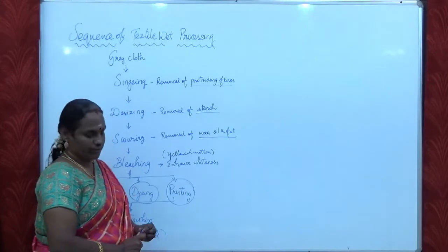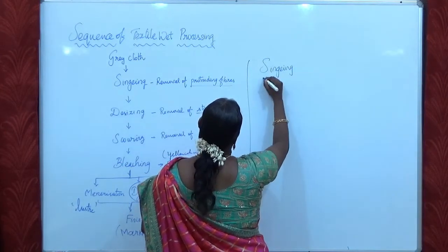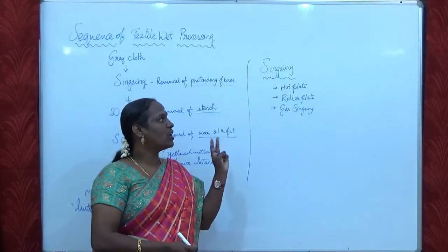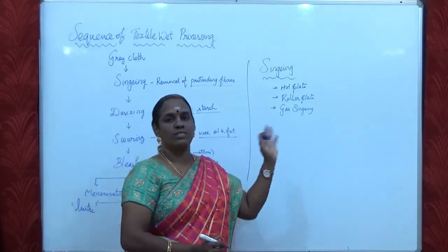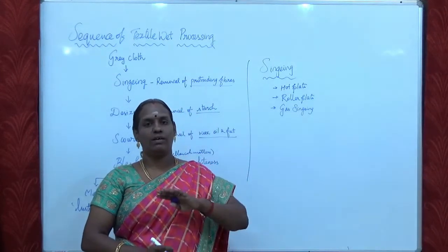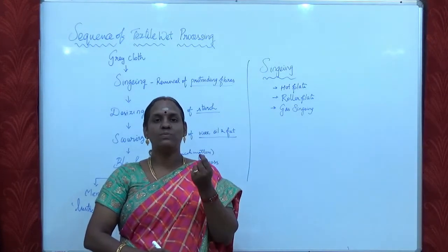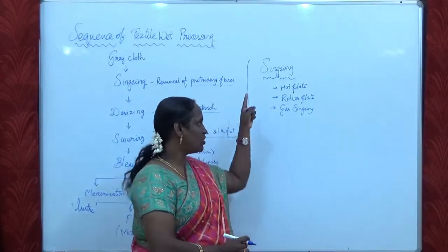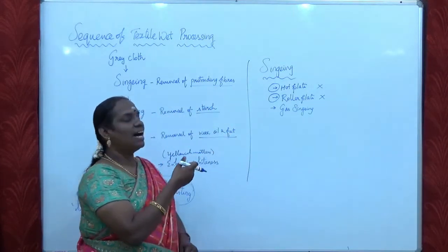Now let us see the types of singeing. There are three types: hot plate singeing, roller plate singeing, and gas singeing. In the singeing process, the gray cloth is passed through a hot surface. Due to contact with the hot surface, the fibers protruding from the fabric are removed. This is the principle of the singeing process.